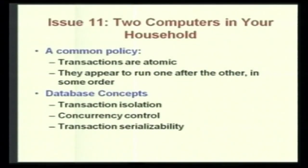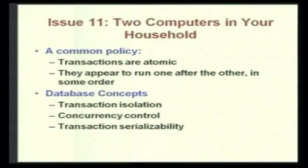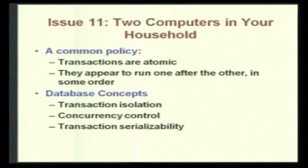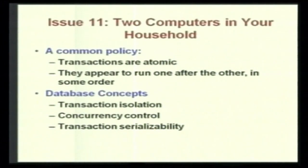A common policy is that transactions are atomic — if one person is doing a transaction, another person cannot do a transaction simultaneously, though the illusion is given that it is simultaneous. They appear to run one after the other in some order. The database concept associated with this is transaction isolation, meaning once a transaction is occurring, another user cannot interfere. There is also concurrency control and transaction serializability — what transactions can be done one after the other and what can be done simultaneously.